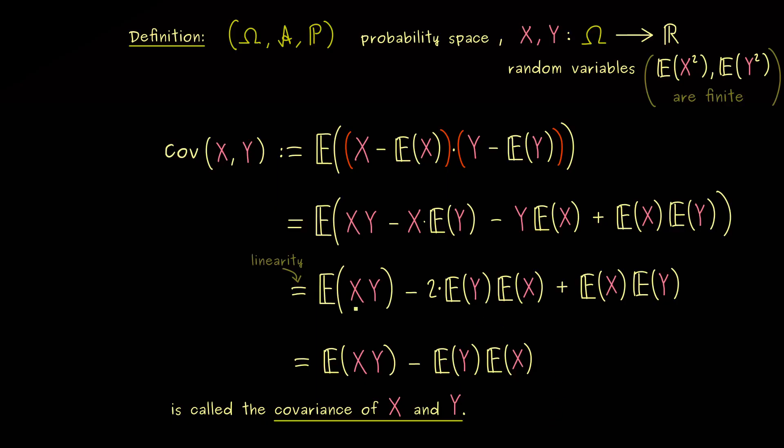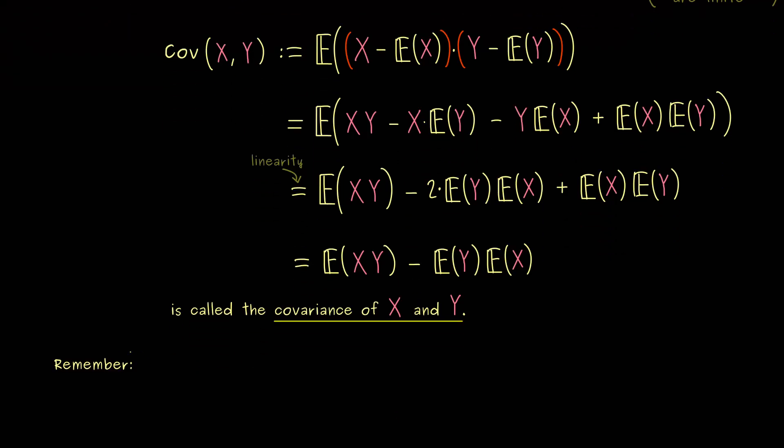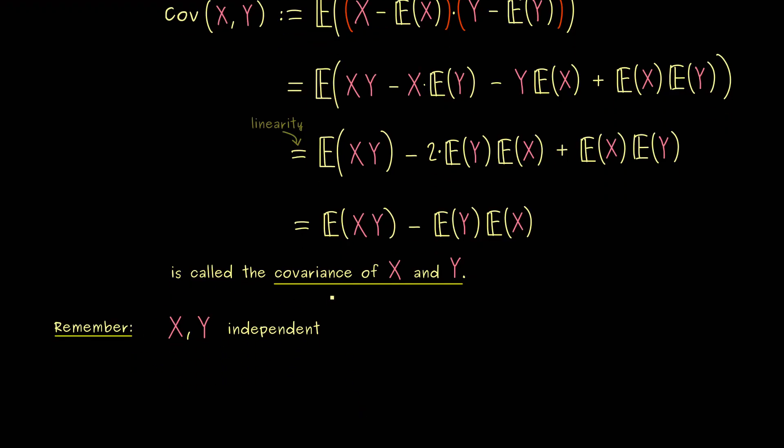So again, by our assumption, this real number is well defined and called the covariance of X and Y. And moreover, this definition shows you that the covariance measures how close the two variables X and Y are to independence. This makes sense because we already know what independence means for the expectations. In fact, if we assume that X and Y are independent, we know that this expectation is just the product of the two expectations. In other words, the covariance is zero in this case.